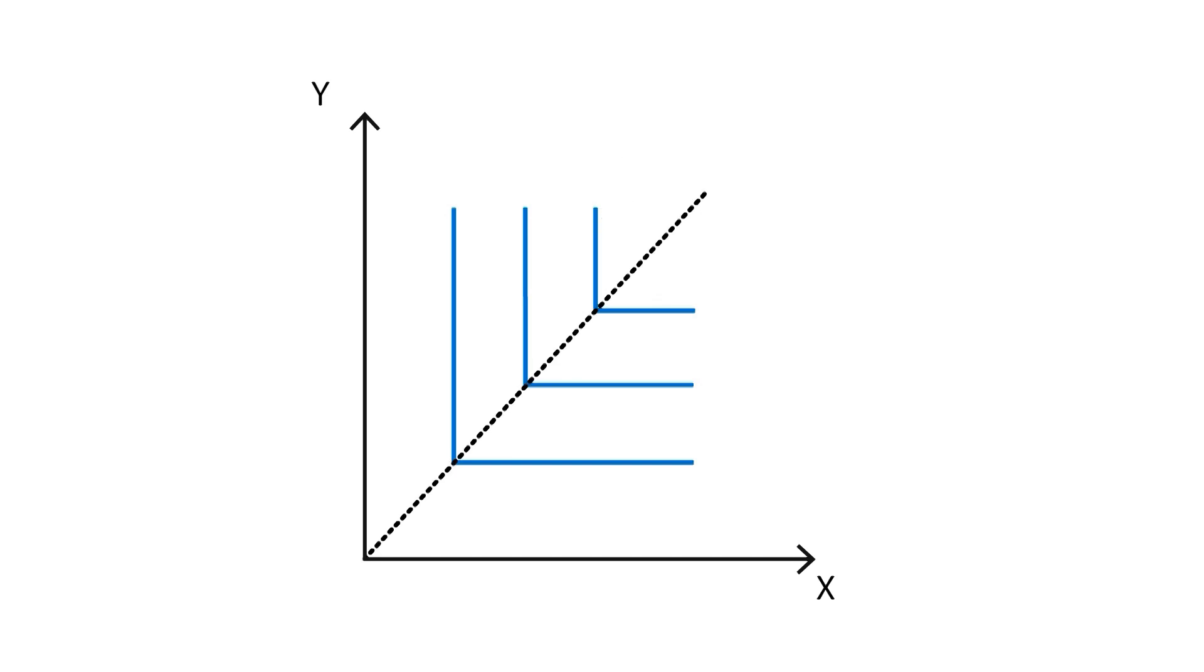It's worth mentioning that this analysis of indifference curves can also be applied to production. In that case, the marginal rate of substitution turns into marginal rate of technical substitution and marginal rate of transformation.